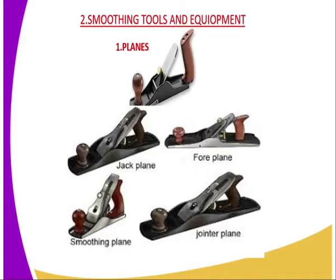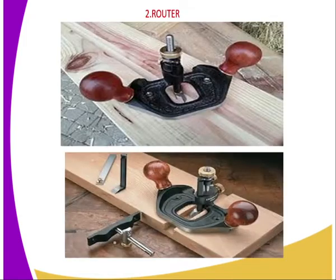We have the smoothing tools and equipment. The first one, we have the planes. We normally use planes and there are several types of planes. Among them, we have a jack plane, we have the fore plane, the joint plane, the smoothing plane, among others.